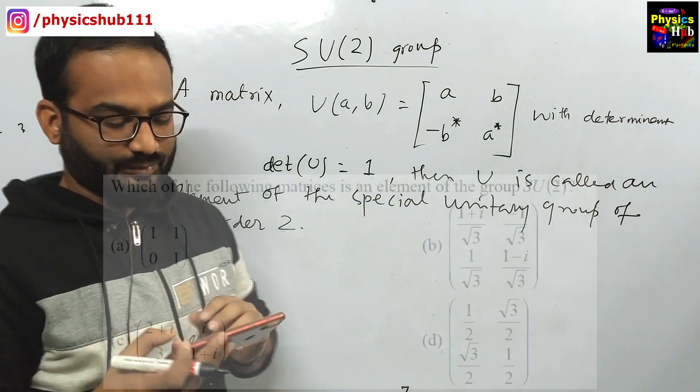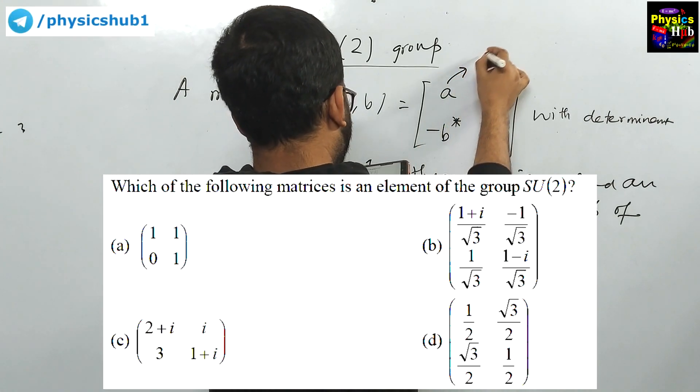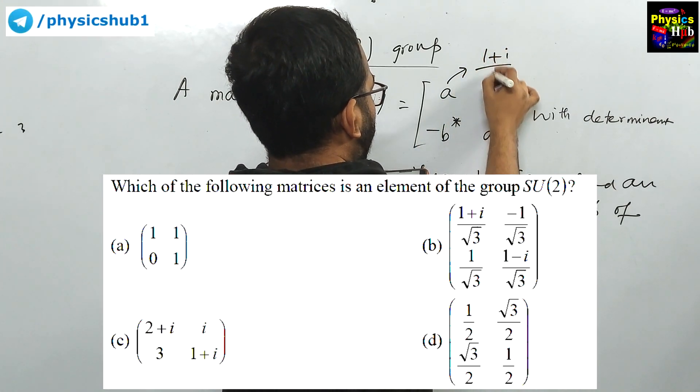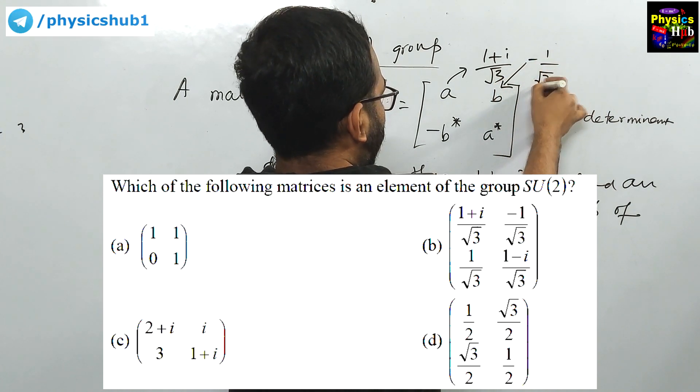Now we can see, as per the option B, you can see at A, it is given to you 1 plus i upon root 3 and in place of B, it is given minus 1 upon root 3.